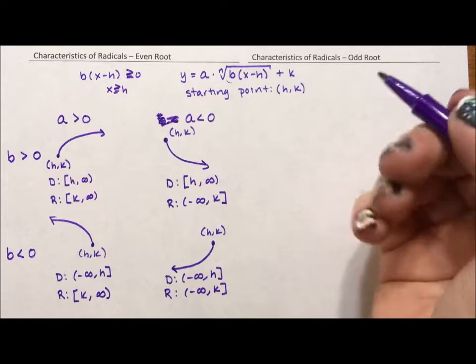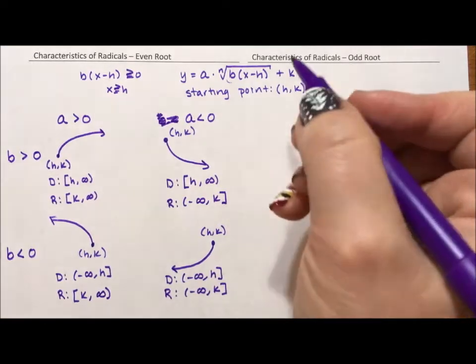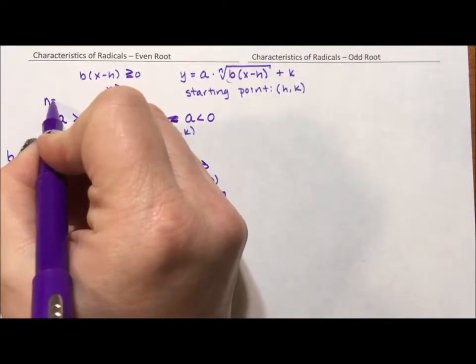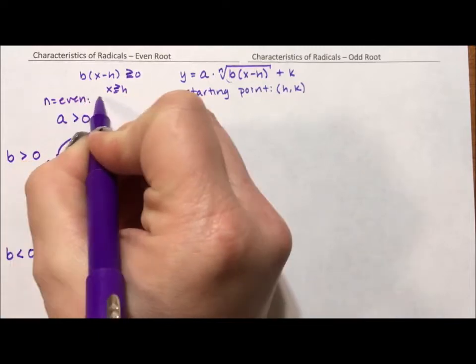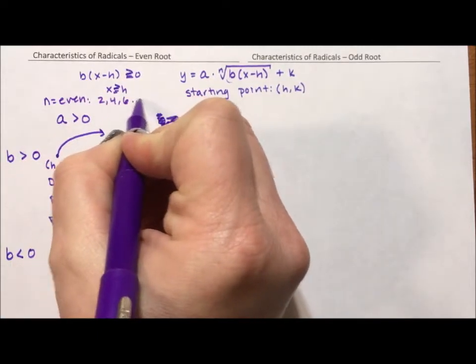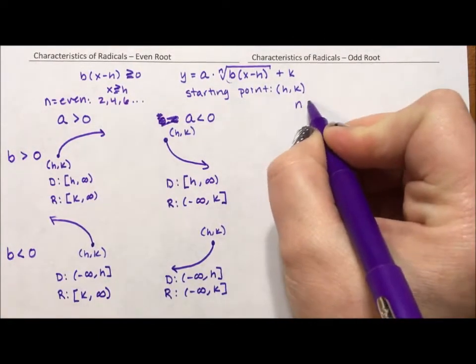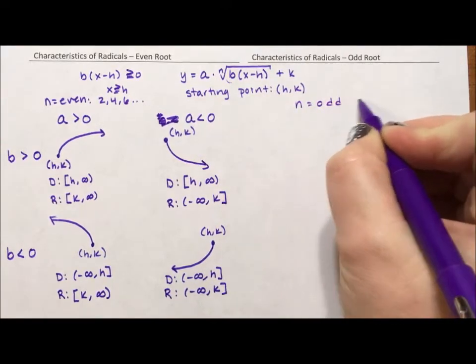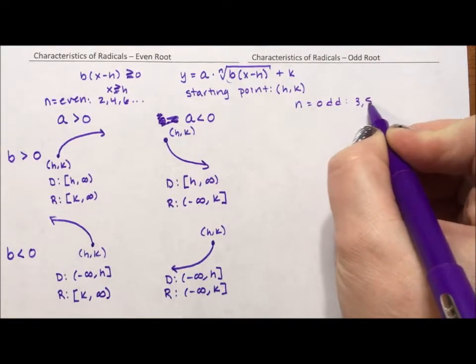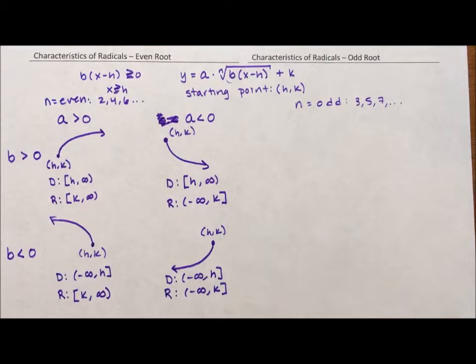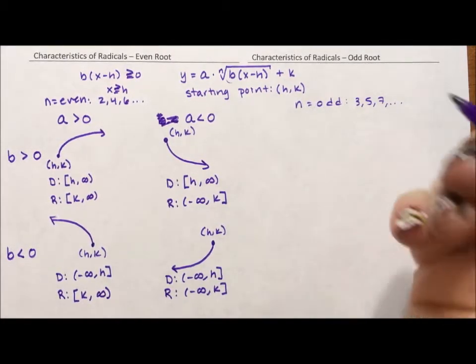All right. So that's all the even root. Look at all the space we have for the odd root. What happens if it's odd? So I should put here that this is even. So it's a square root, a fourth root, a sixth root. Here we're going to set n equal to odd. That means we have a cube root, a fifth root, a seventh root. It also works for a first root for the domain and range.